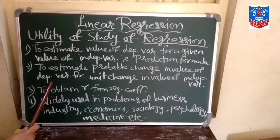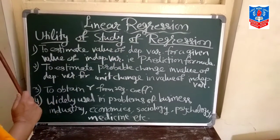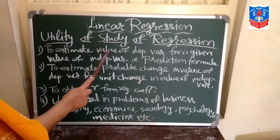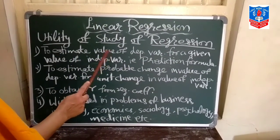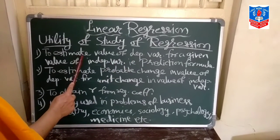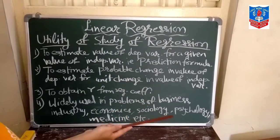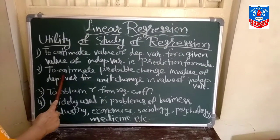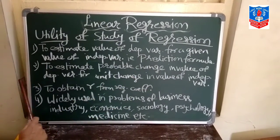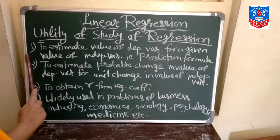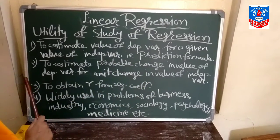The last topic of this chapter is the utility of the study of regression — that is, the uses of regression. The first use is to estimate the value of the dependent variable for a given value of the independent variable, which is the prediction formula. We predict the value of X we use and based on that find the estimated value of Y. The second use is to estimate the probable change in the value of the dependent variable for a unit change in the value of the independent variable.